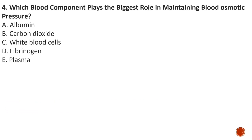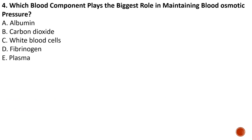Question number four: which blood component plays the biggest role in maintaining blood osmotic pressure? The answer is albumin, which is a plasma protein present in plasma that helps to maintain blood osmotic pressure.